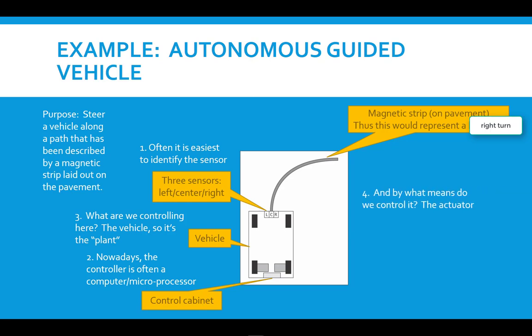And oftentimes, the hardest thing to identify is the actuator. And we ask the question, how are we going to control the position of the plant or the vehicle? In this case, what we have is two independent drive motors on the rear wheels. So if we turn the left motor, for instance, faster than the right motor, then that will make the vehicle turn right. If we supply more power to the right motor than the left motor, then the vehicle will turn left.